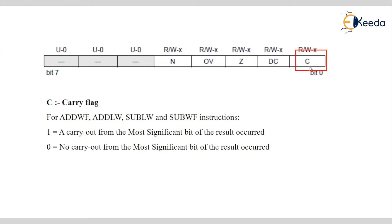The first bit is the Carry flag, indicated by C. We can write or read the status of this bit. We can write the status — like clear and set — and we can read what the status of this flag is. These 5 bits are mostly called flags.